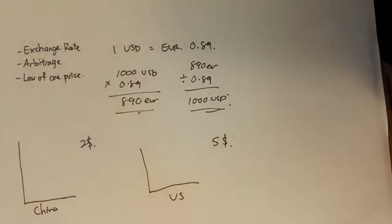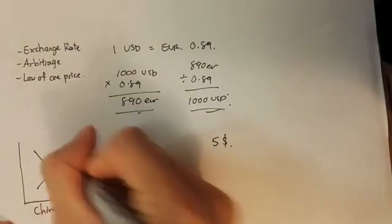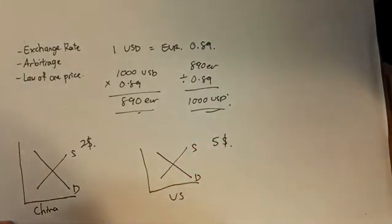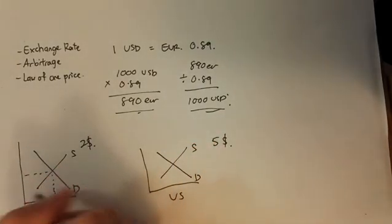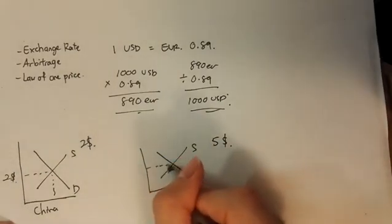And what does that mean is that, let's say the item that I want to buy in China is, let's say it's a burger. Okay, and let's draw our demand and supply curve. Let's say the burger in China costs $2. Okay, and the burger in the United States costs $5.